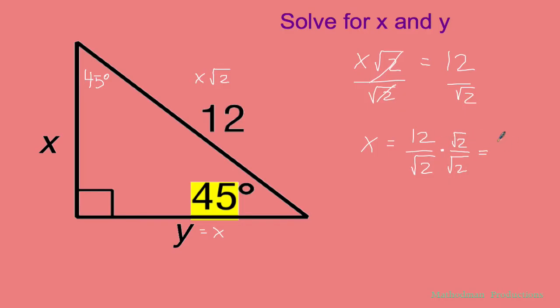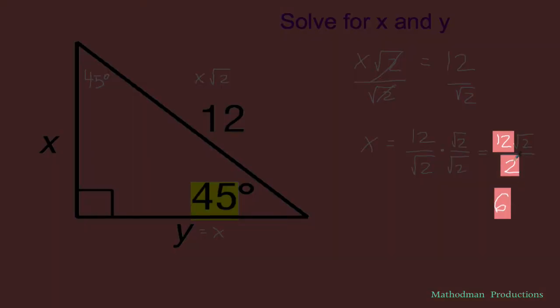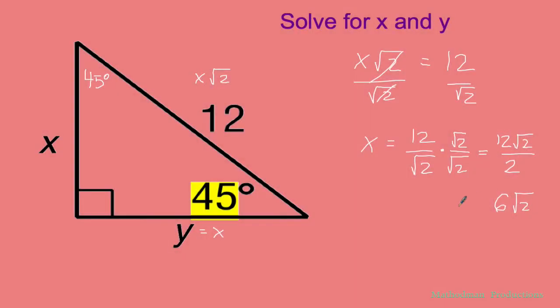12 times the square root of 2 is just that, and then the square root of 2 times the square root of 2 is just 2. To simplify that further, you can take 12 divided by 2, which is 6, and then square root of 2. X equals 6√2.